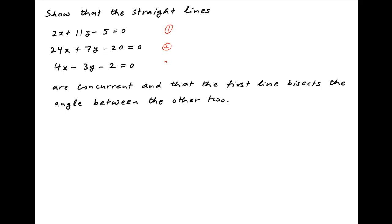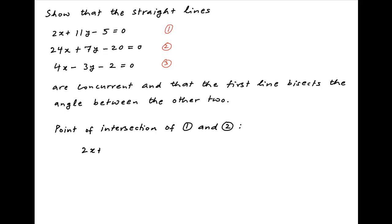Let's denote the equations of the three straight lines by 1, 2, and 3 respectively. The point of intersection of lines 1 and 2 is obtained by solving equations 1 and 2.